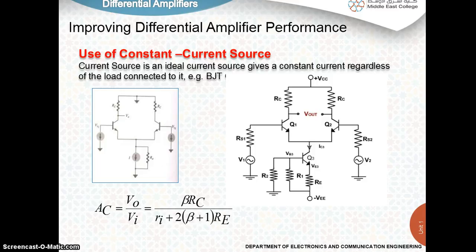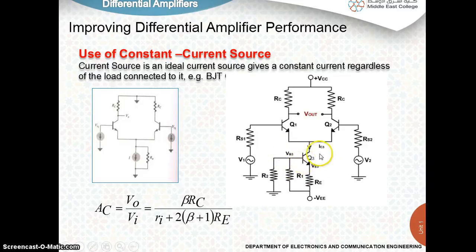By using a constant current source, the DC bias current is considered better as it provides current stabilization and assures a stable operating point for the differential amplifier. In this figure, we can see a practical constant current source with a high impedance, which will act as a current source.